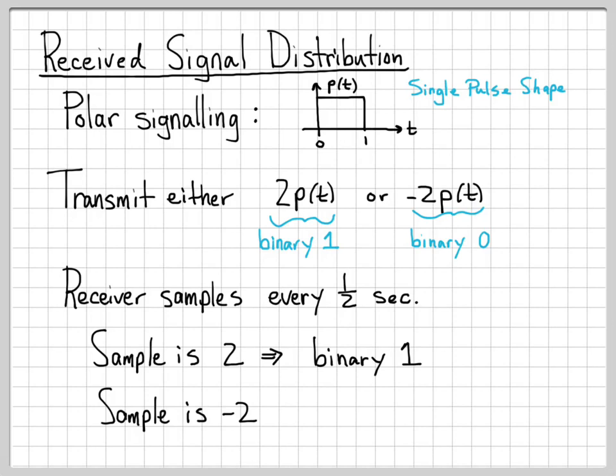Similarly, if the receiver samples and gets a negative 2, it decides that a binary 0 must have been transmitted, because the only way to sample a negative 2 is if minus 2P(T) had been transmitted. So at the receiver, we're simply sampling and making a decision based on that sample value. In the case of no noise, this works perfectly — what is received is exactly 2P(T) or minus 2P(T), and the receiver makes perfect decisions about the binary bits.